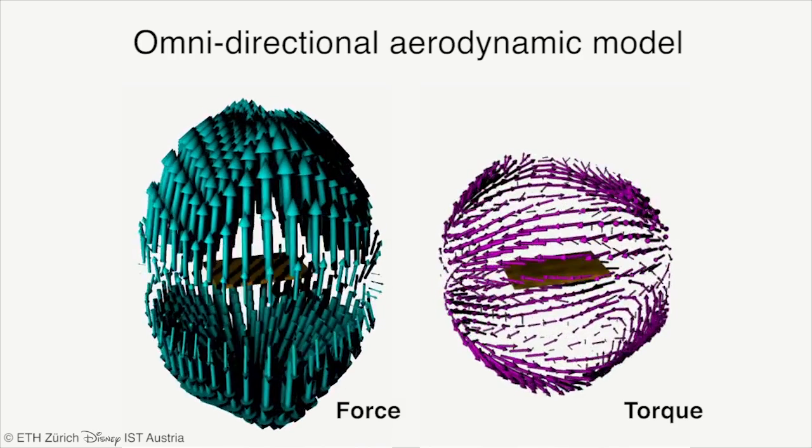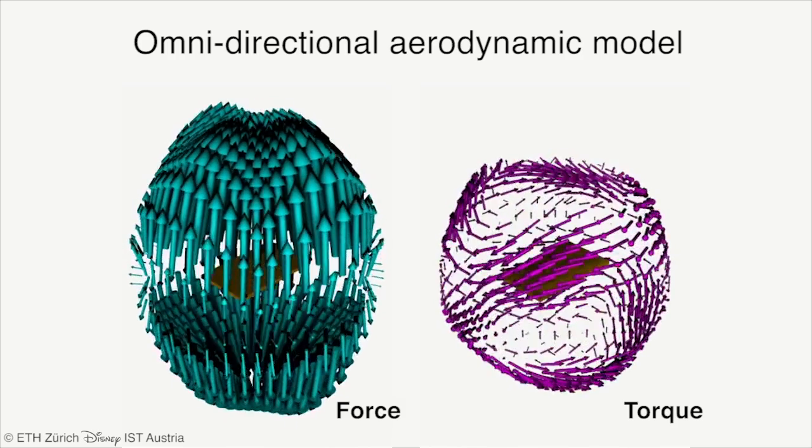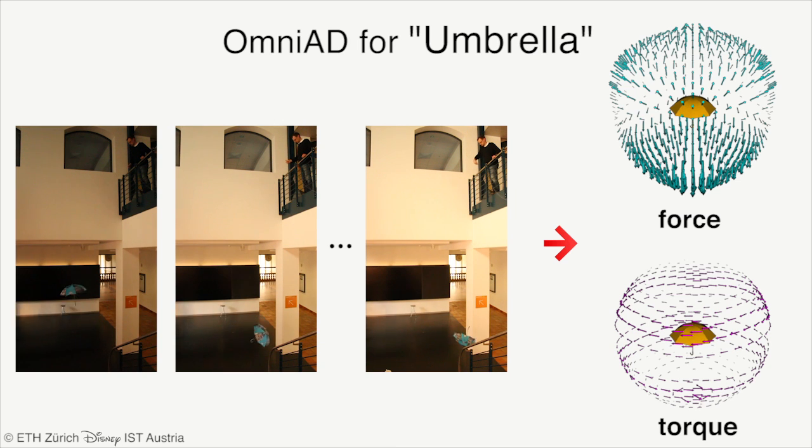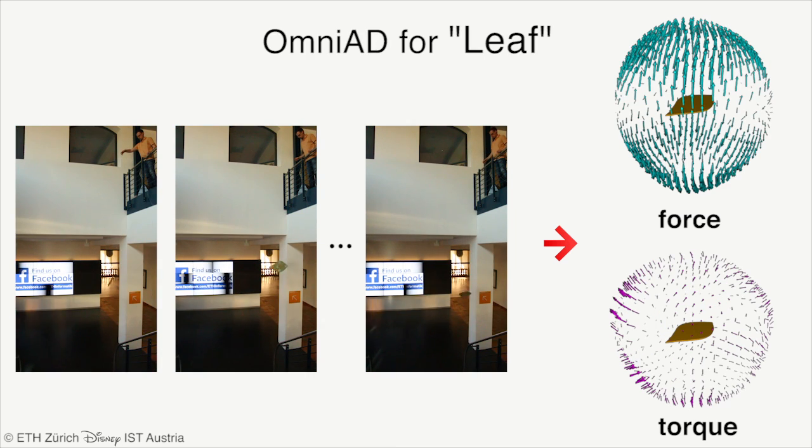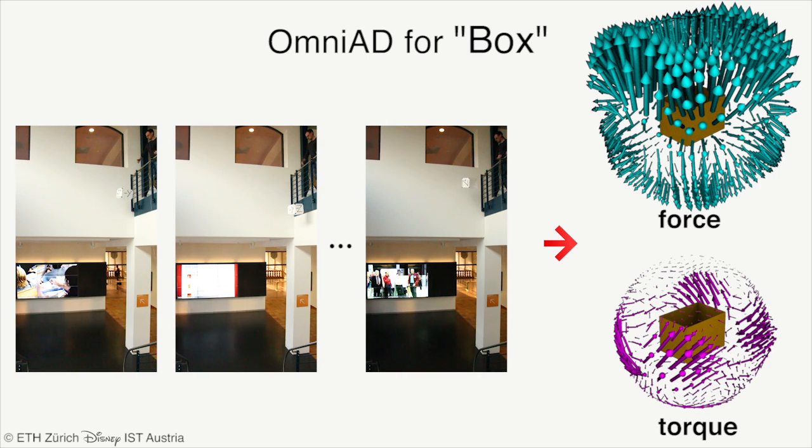With our example-based pipeline, we can build aerodynamic models for a variety of objects, including an umbrella, a leaf, a heart, an open box, and a hat.